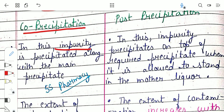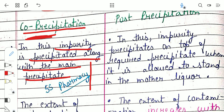In the case of co-precipitation, the impurity is precipitated along with the main precipitate. When the precipitation process is ongoing, the impurity gets precipitated at the same time along with the required precipitate. This is what happens in co-precipitation.